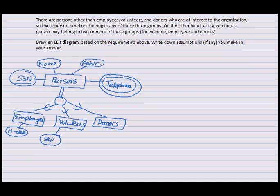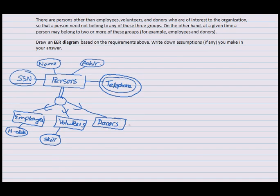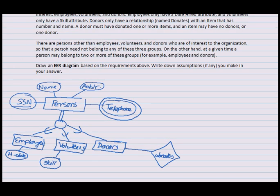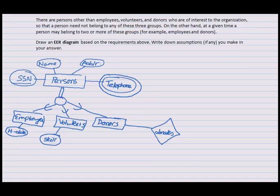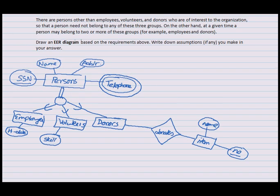Donors only have a relationship called donates with an item that has name and number. So donor does not have a specialist attribute, but it has a relationship called donates. Donates an item which has a name and a number, which could be our key attribute.